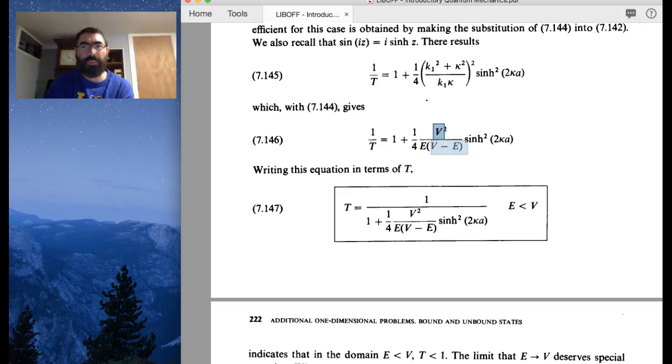Now, the difference is reversed, so it's V minus the total energy, and we replaced the sine with the hyperbolic sine function, and we replaced kappa, I'm sorry, k2, the wave number k2 inside the barrier, or I'm sorry, above the barrier last time, with the kappa here.